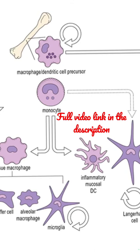dead cells and organisms. In the lung, the alveolar macrophages engulf the inhaled particles. They are seen as dust cells. In the spleen and the liver, the macrophages destroy aged and damaged erythrocytes.